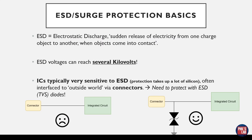ESD, or electrostatic discharge, is effectively a sudden release of electricity from one charged object to another when these objects come into contact. One of the most common examples is a person who walks over a carpet, charges themselves up with static electricity, then touches an electrical conductor and releases this charged energy in the form of an ESD spike. These ESD spikes can reach voltages of several kilovolts and can be very harmful to electronics, in particular integrated circuits.